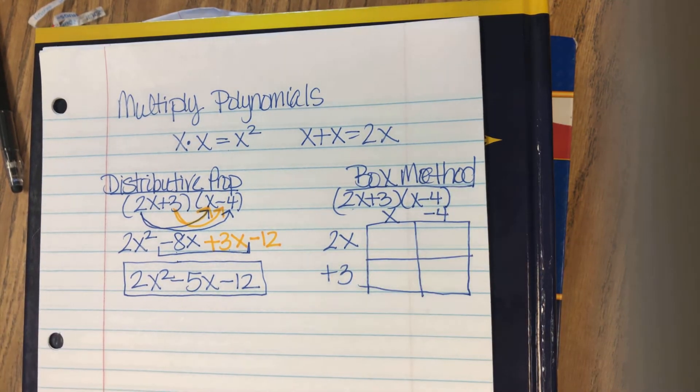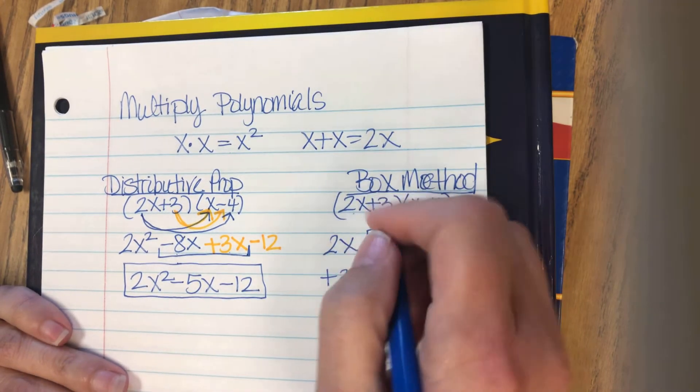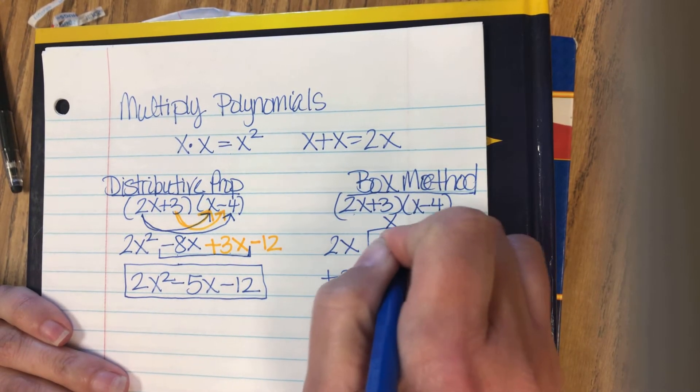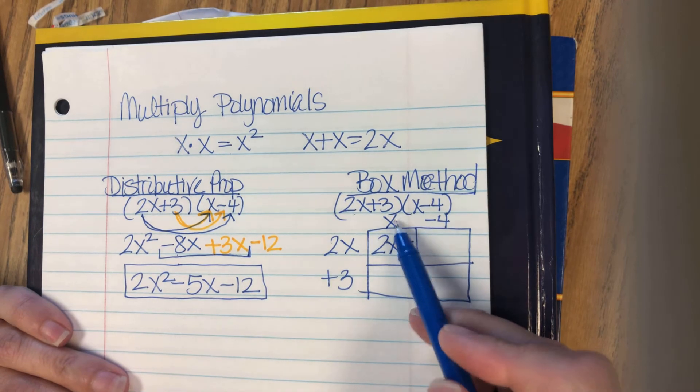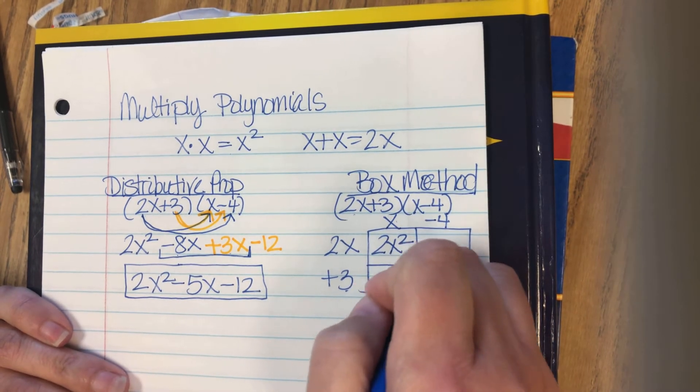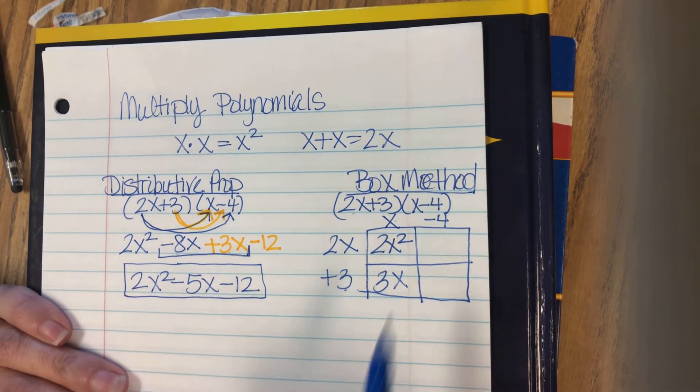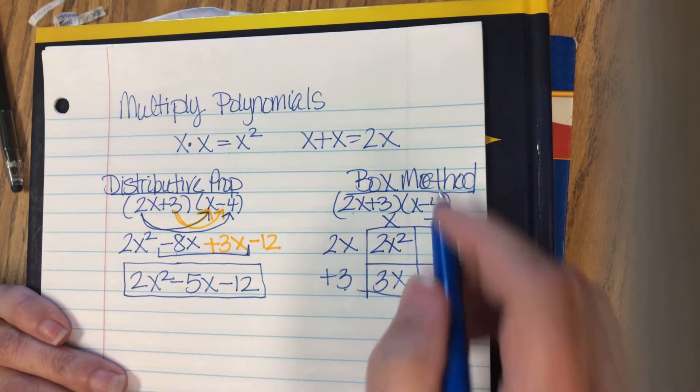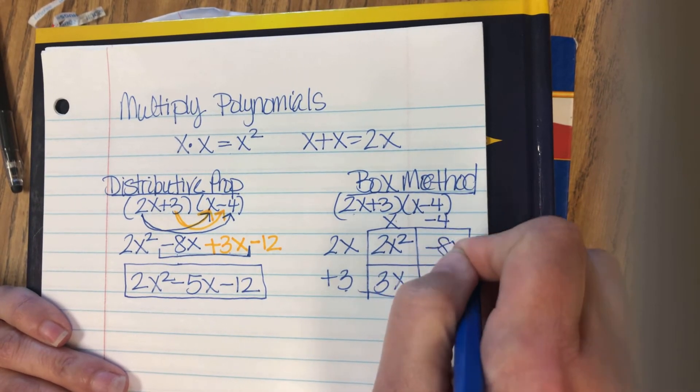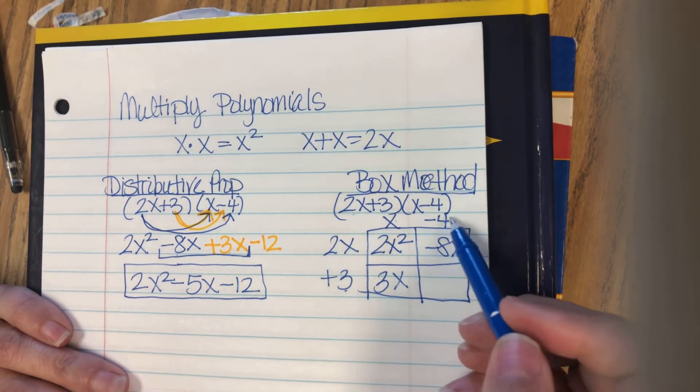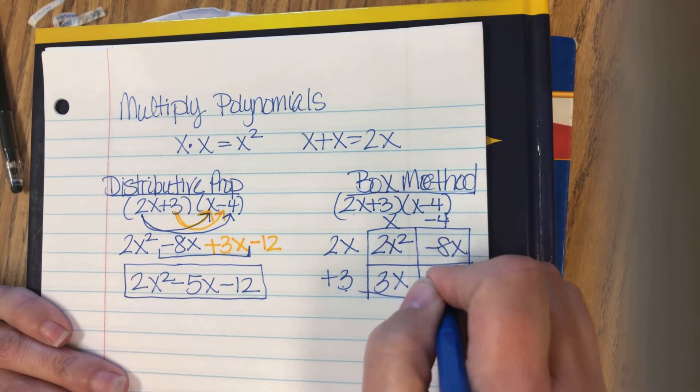And then we just multiply the top of the box times the side of the box. So x times 2x is that 2x squared. x times 3 is 3x. Negative 4 times 2x is negative 8x. And negative 4 times 3 is negative 12.